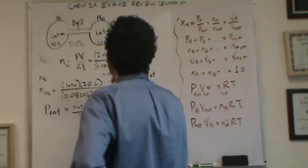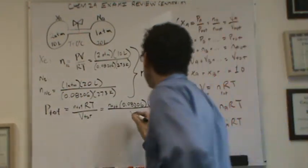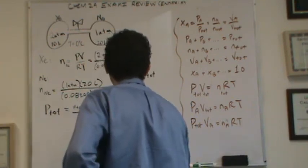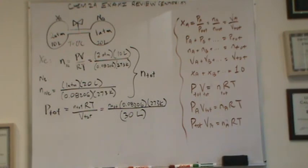And V total is now the sum of those two volumes, so 10 plus 20, which would now be 30 liters. And whatever that number ends up being is P total, or the total pressure.